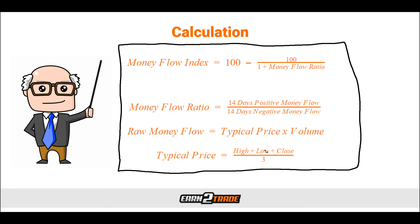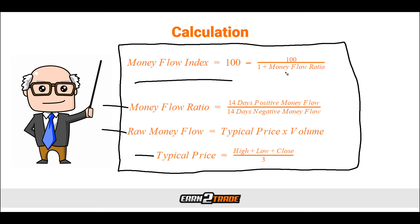It might seem complicated at first, but remember, this is an indicator where it is doing this math for you, so don't feel like you're going to have to do this on a daily basis. To better understand how to calculate the MFI, let's go through the step-by-step process. The first step is to calculate the typical price for each of the last 14 periods. For each period, we mark whether the price has gone up or down to determine whether the raw money flow is positive or negative. Then we calculate the raw money flow, add up all positive money flows for the last 14 periods, and divide them by the negative ones to calculate the money flow ratio. Finally, we calculate the MFI using the formula, then use the last 14 periods as a basis for calculations going forward.